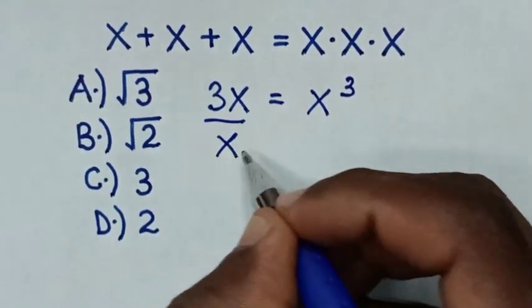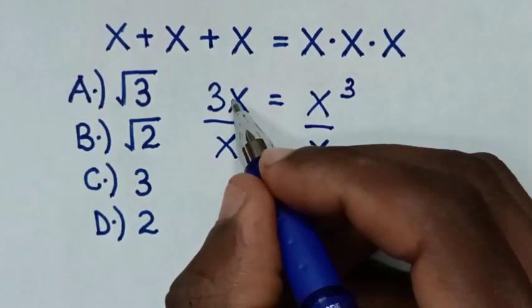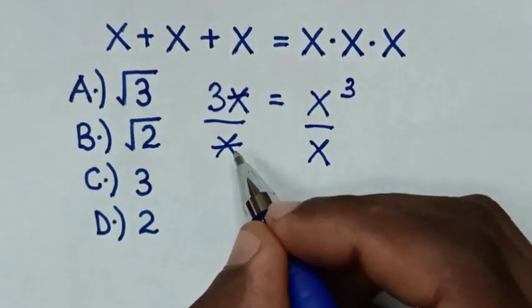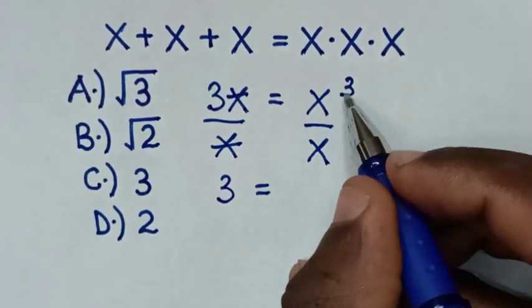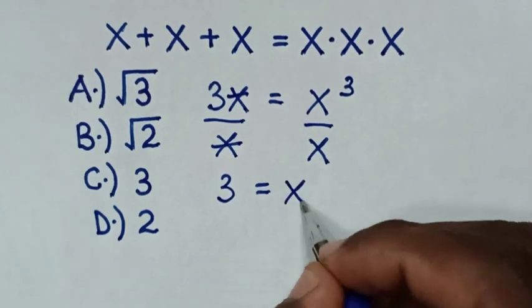We divide by x on both sides. So this x will cancel this x. Then it will be 3 equals x to the power 3 divided by x, which is x squared.